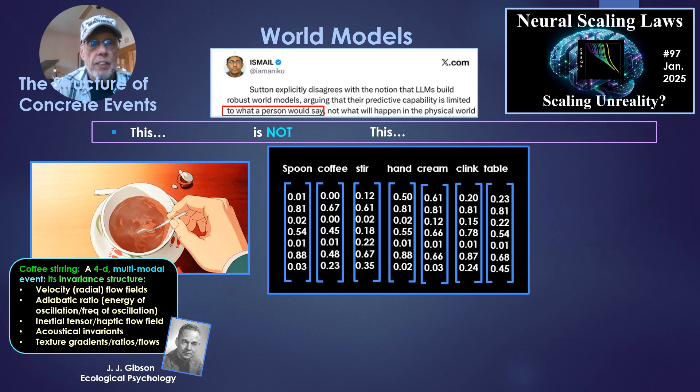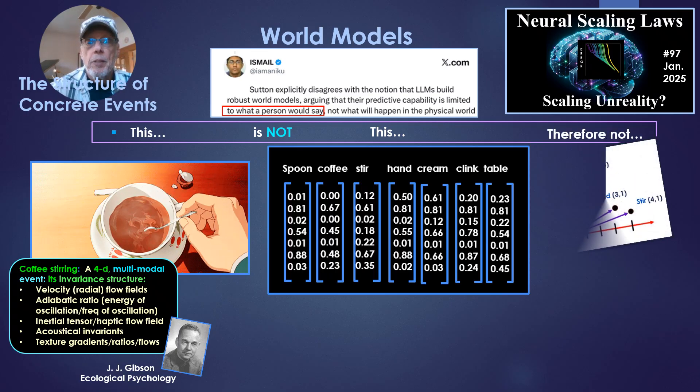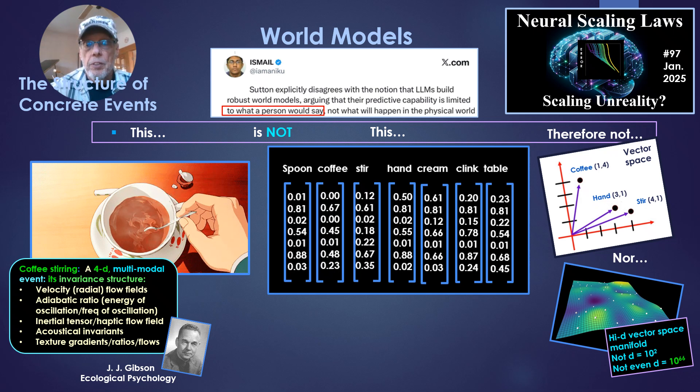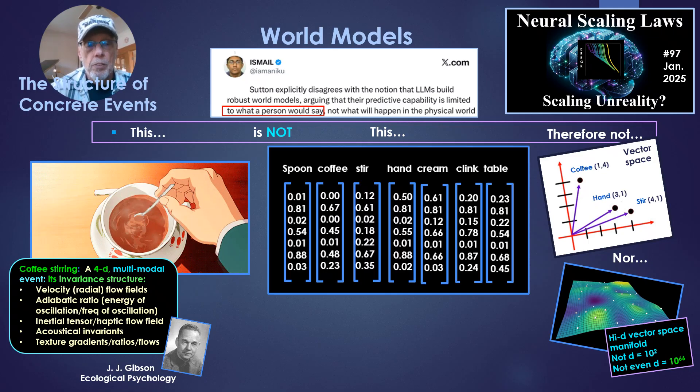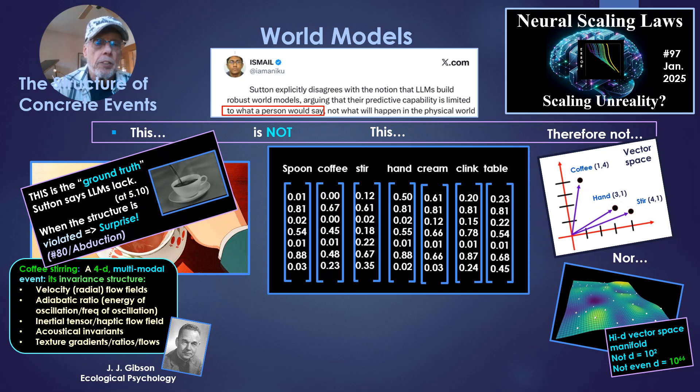So this is not this, a pile of vectors, as would be in a large language model, which is to say, therefore, not a high-dimensional vector space or a high-dimensional manifold, a vector space manifold. I don't care whether the dimensionality is 10 squared or 10 to the 66th. That is, I don't care how many parameters you have. You're not going to reconstruct or represent that event. But this whole structure of events, this is the ground truth, I would argue, that Sutton says LLMs lack.